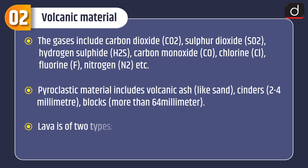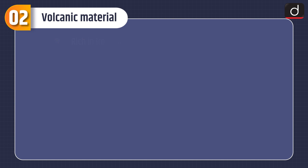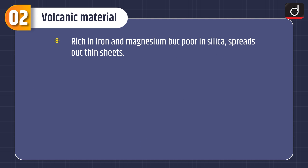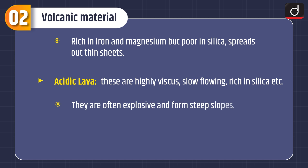Lava is of two types. Basic lava: these are highly fluid, dark in colour, and the hottest lava, rich in iron and magnesium but poor in silica, and they spread out in thin sheets. Acidic lava: these are highly viscous, slow flowing, rich in silica, often explosive, and form steep slopes.